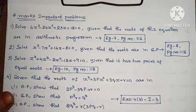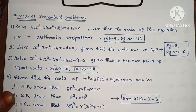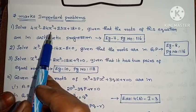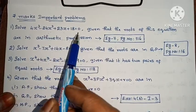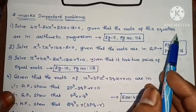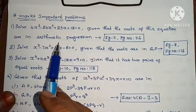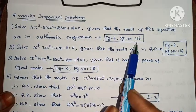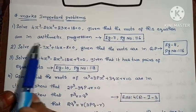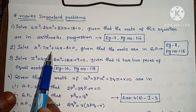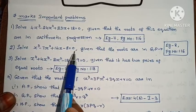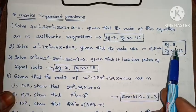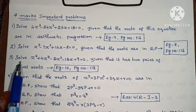Next, the 7-mark important problems. First one: solve 4x³ minus 24x² plus 23x plus 18 equals 0, given that the roots are in arithmetic progression (AP). Example 7, page number 116. Next, solve x³ minus 7x² plus 14x minus 8 equals 0, given that the roots are in GP. Example 8, page number 116.